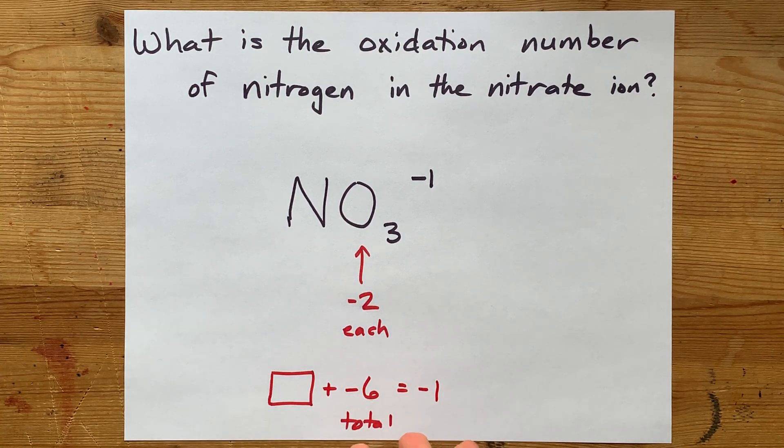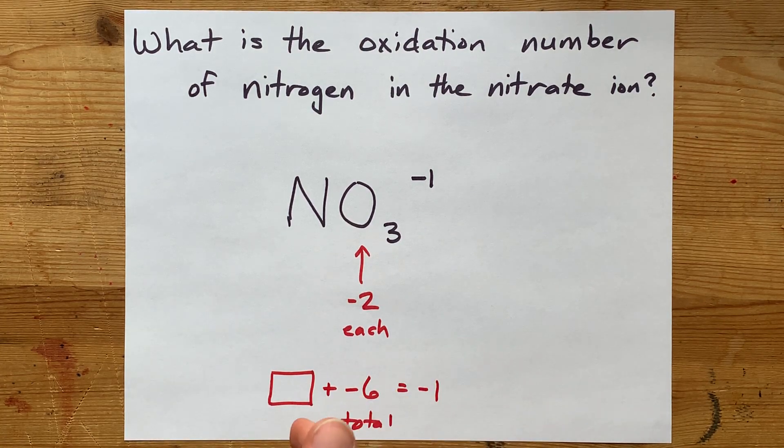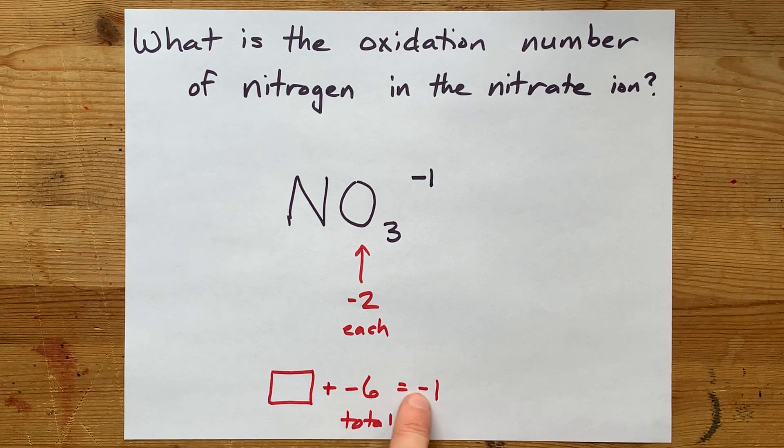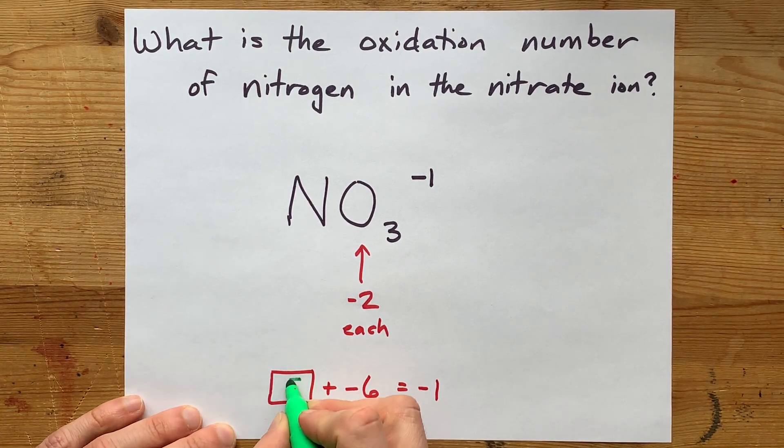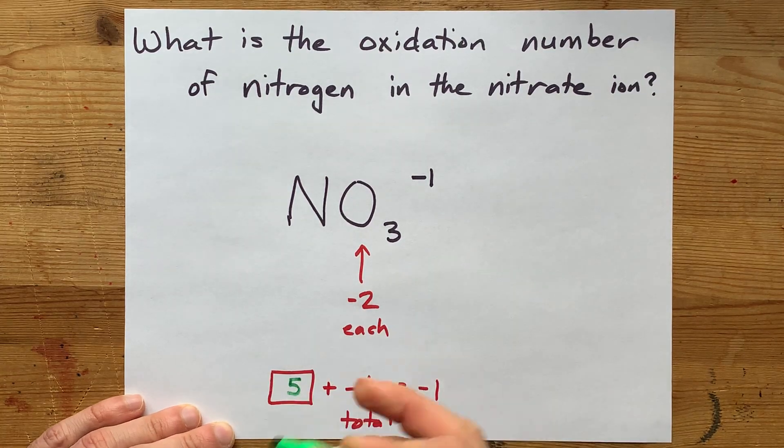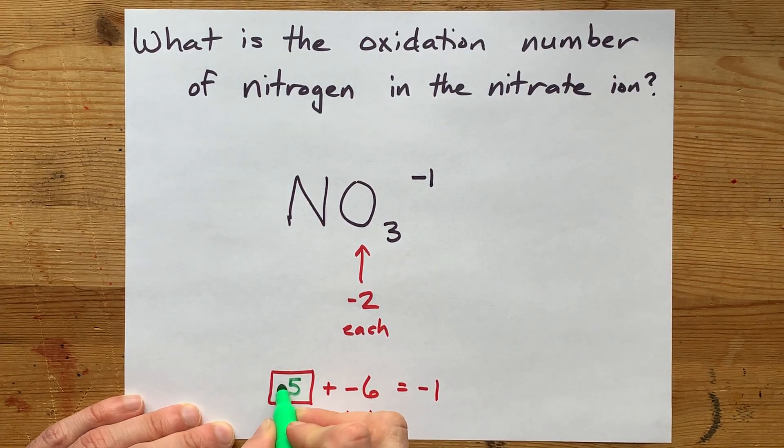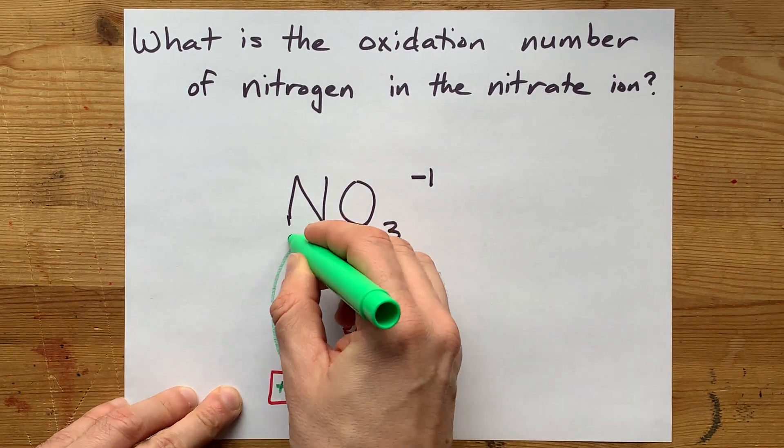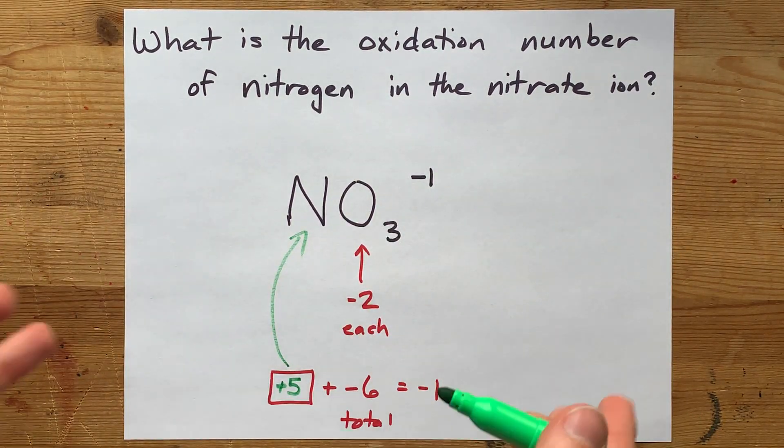Now, this may look like math, but you can also just do it in your head, right? What do you start with and then you take away six to get negative one? Well, the answer happens to be five. With oxidation numbers, you have to include a symbol, so it's positive five. The oxidation number of nitrogen in nitrate is positive five.